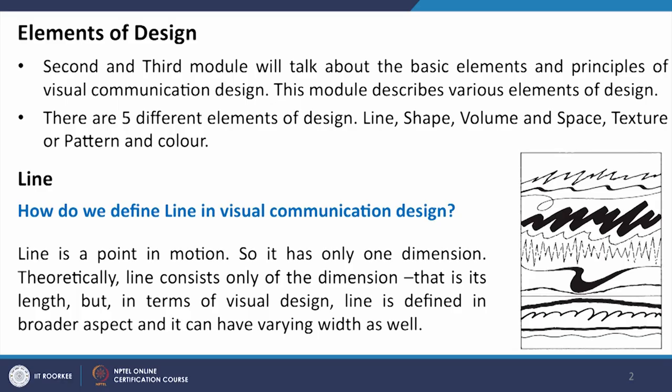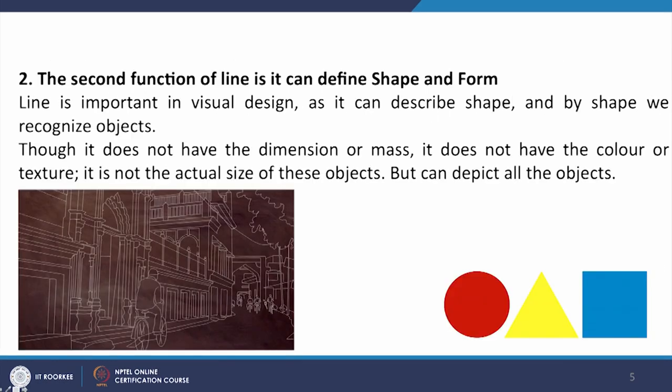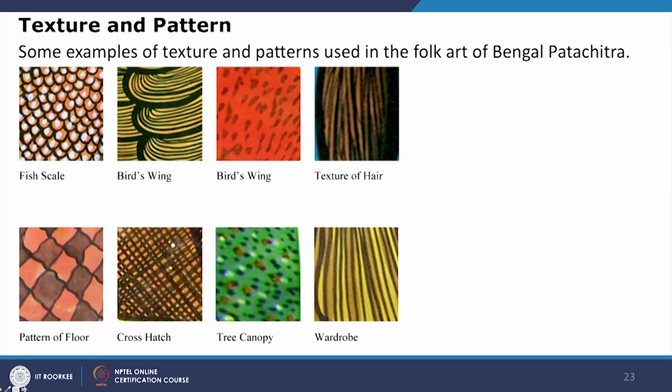In the previous module, we discussed about three elements: line, which is one-dimensional; shape, which is two-dimensional; and we also discussed texture and pattern. In this module, we will discuss about space, which is three-dimensional, and we will also discuss about color.